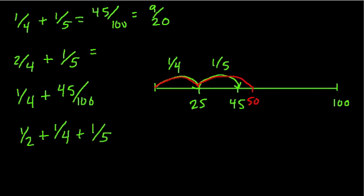And this time, let me erase this. We're hopping up 2 fourths. That's another fourth. So a fourth and a fourth brings us to 50, because there are 2 hops at 25. And then to that, we're adding a fifth. And we said a fifth was 20, so we're going to add a fifth. And that brings us to 70.